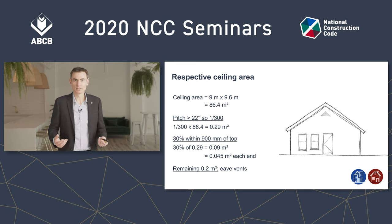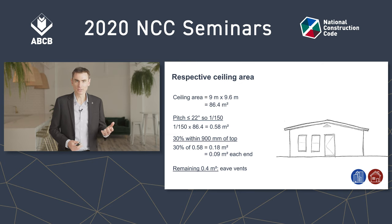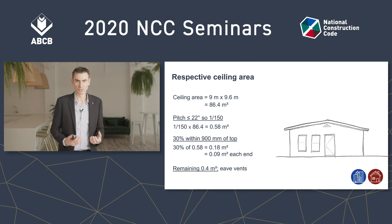What if the roof pitch is 22 degrees or less? The ceiling area is multiplied by 1/150 instead. Notice how the ventilating area required doubles when the pitch is less. This is because shallow roof spaces are more prone to condensation, as there is less volume for moist air to occupy.